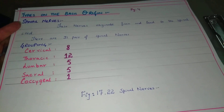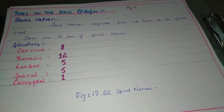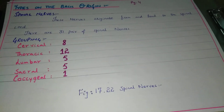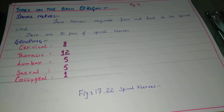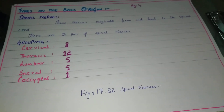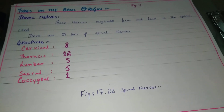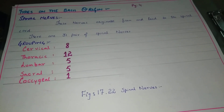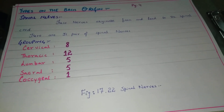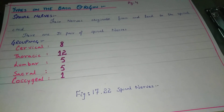We have a total of 31 pairs of spinal nerves — this is very important from an examination and MCQ point of view. We have divided the numbering into groups; for example, nerves arising from the neck region number 8. Let's look at that.